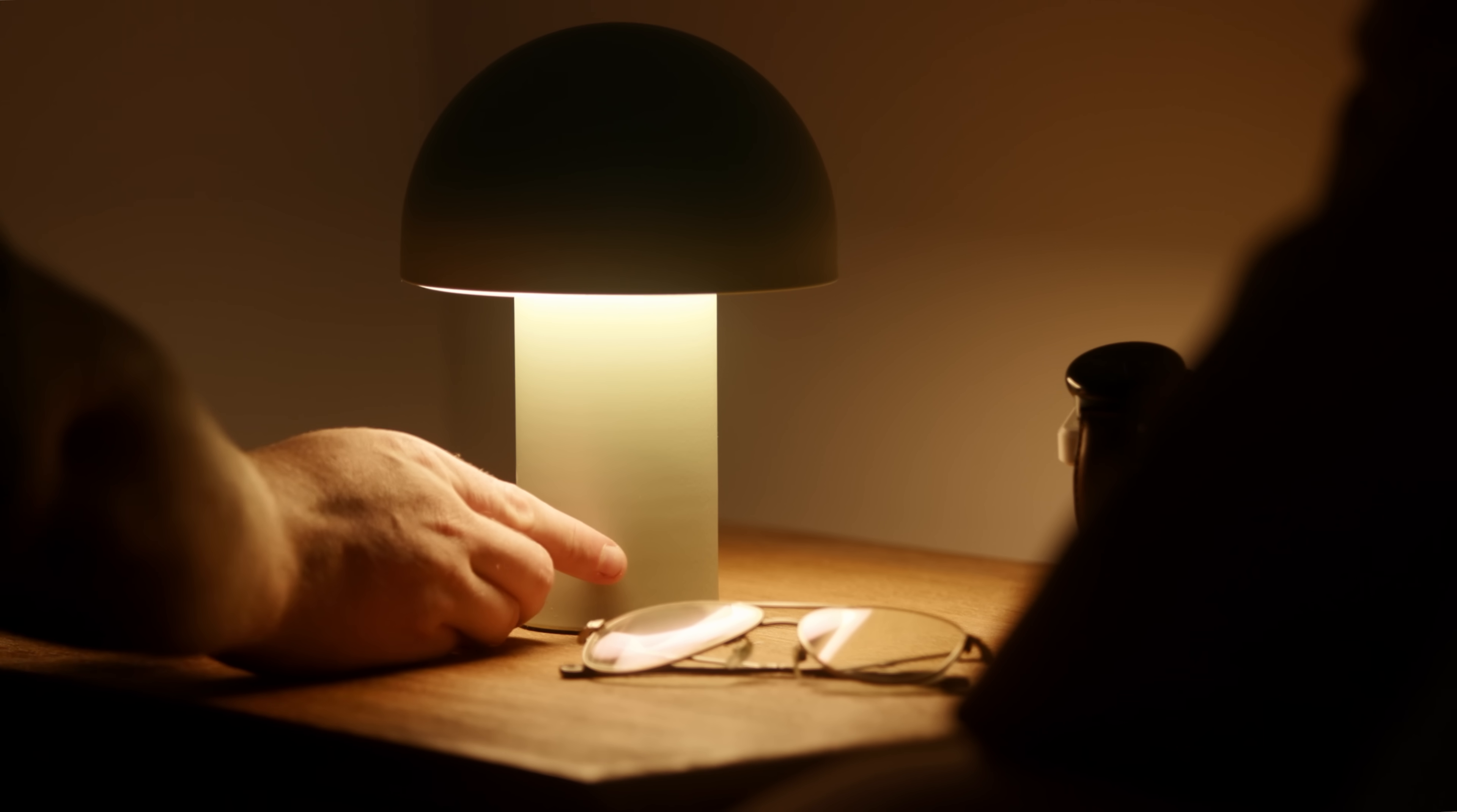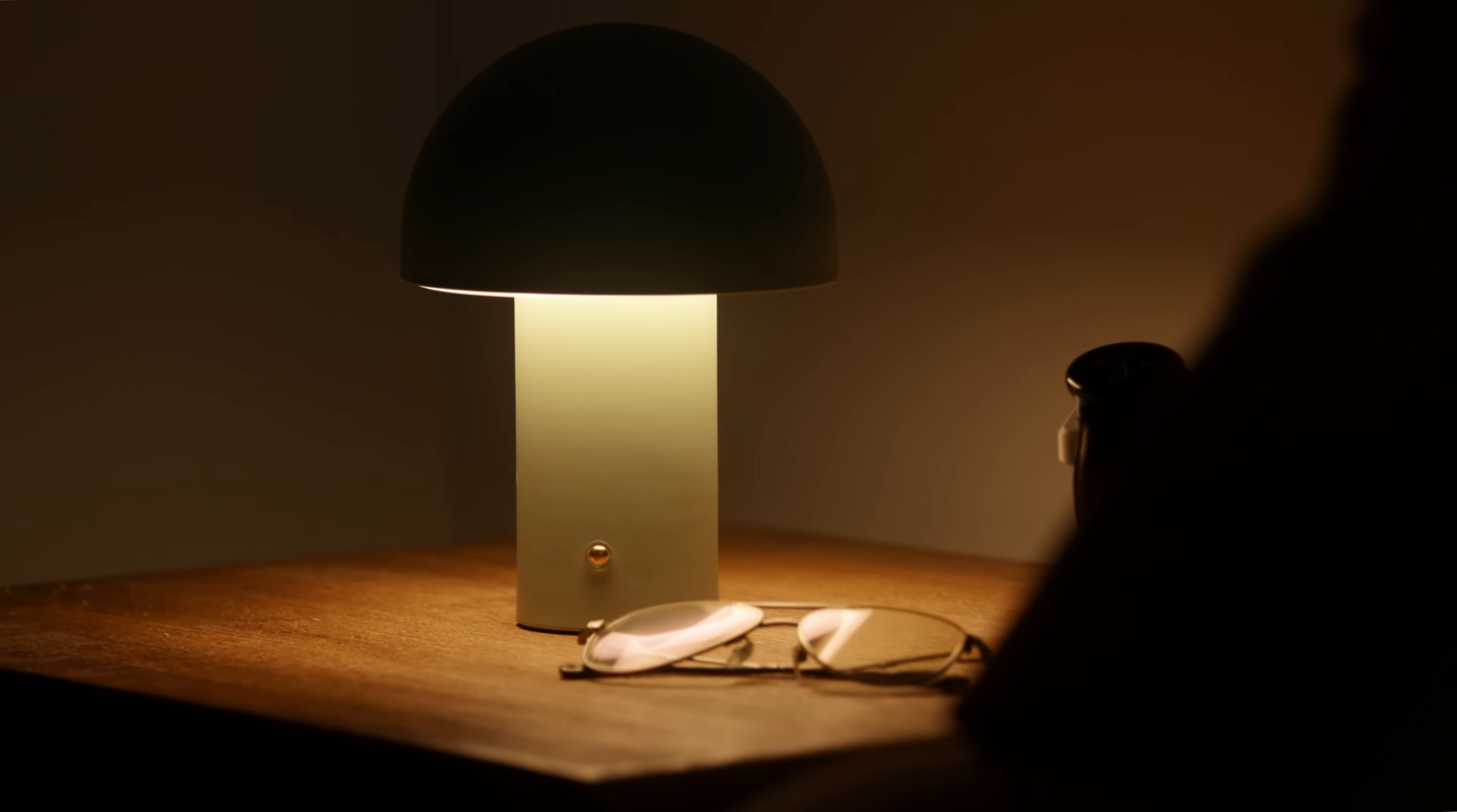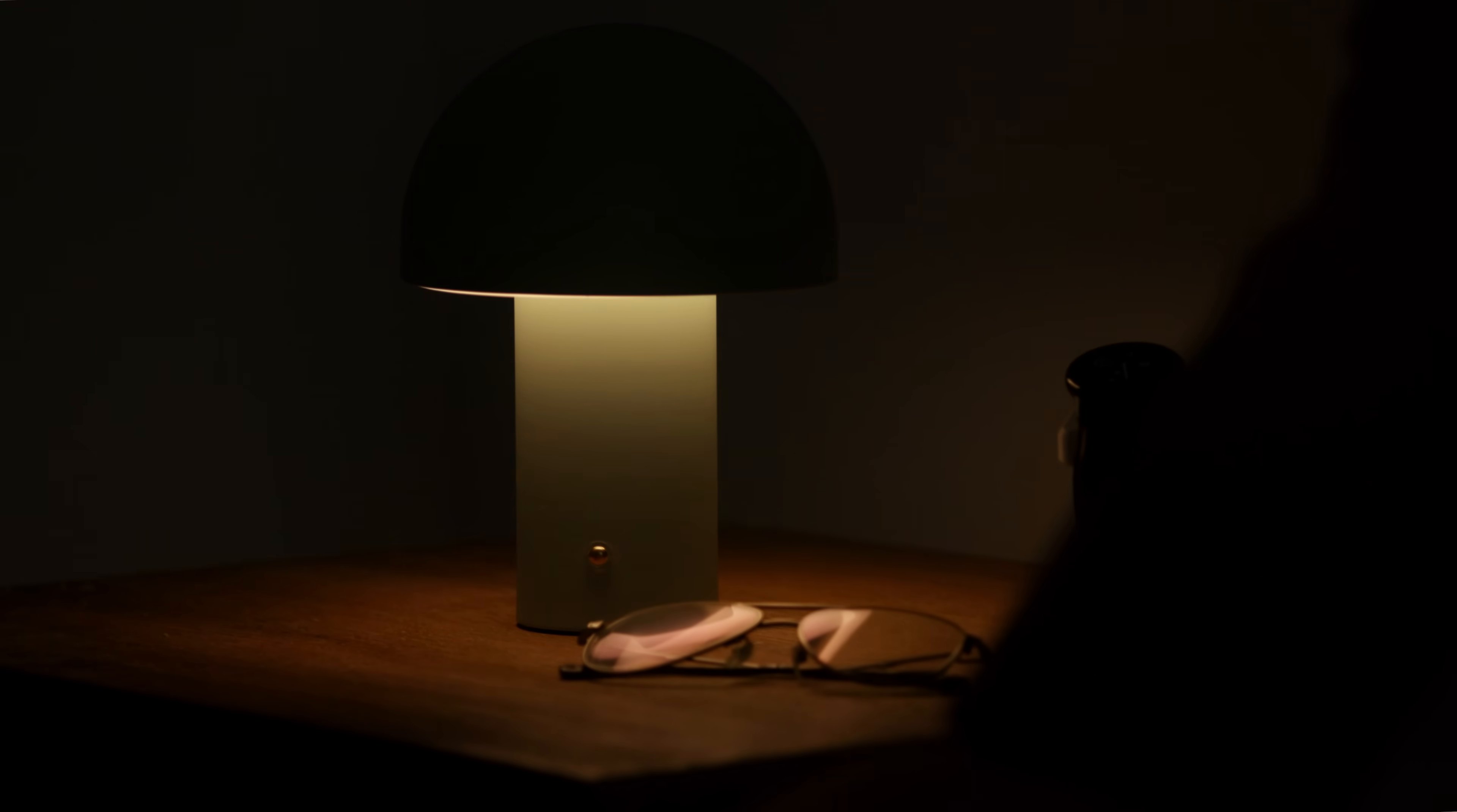Holding the button will turn both lamps off, lock the front door, and turn off any other lights in the house to give us a bit of peace of mind and save us from having to get up and check.